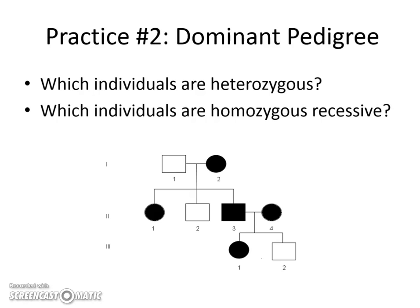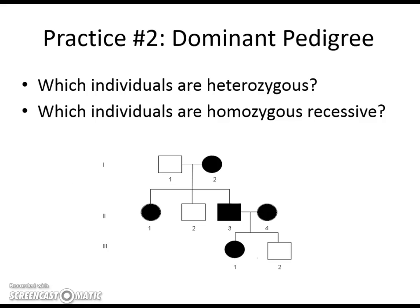So let's practice this. I've switched up the letters a little bit and I want you to look at this dominant pedigree and answer these questions. Pause the video and answer them in your laboratory notebook or in your head. First question: which individuals are heterozygous — that means capital B, lowercase b? Second question: which individuals are homozygous recessive — that means two lowercase b's, or in this case unaffected? Pause the video here and try to figure this out.